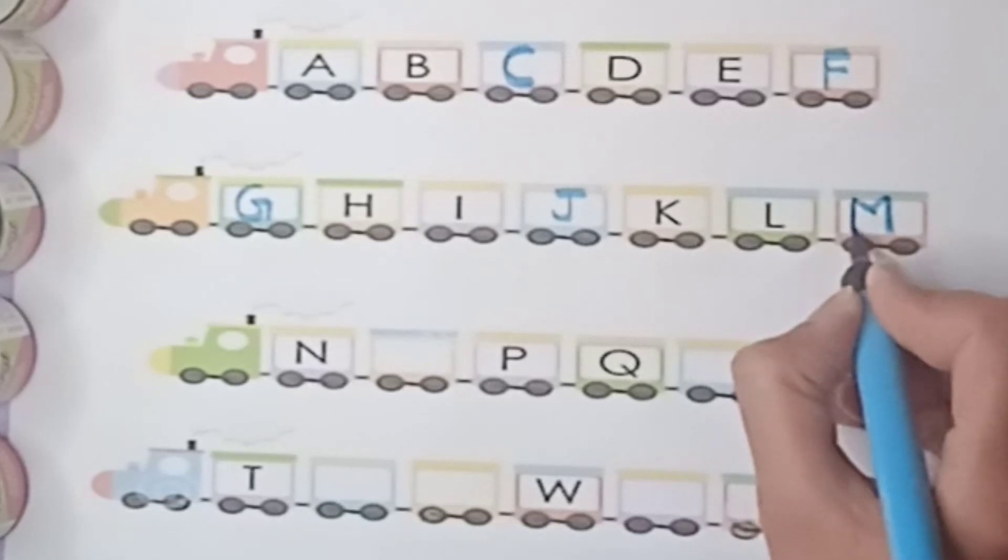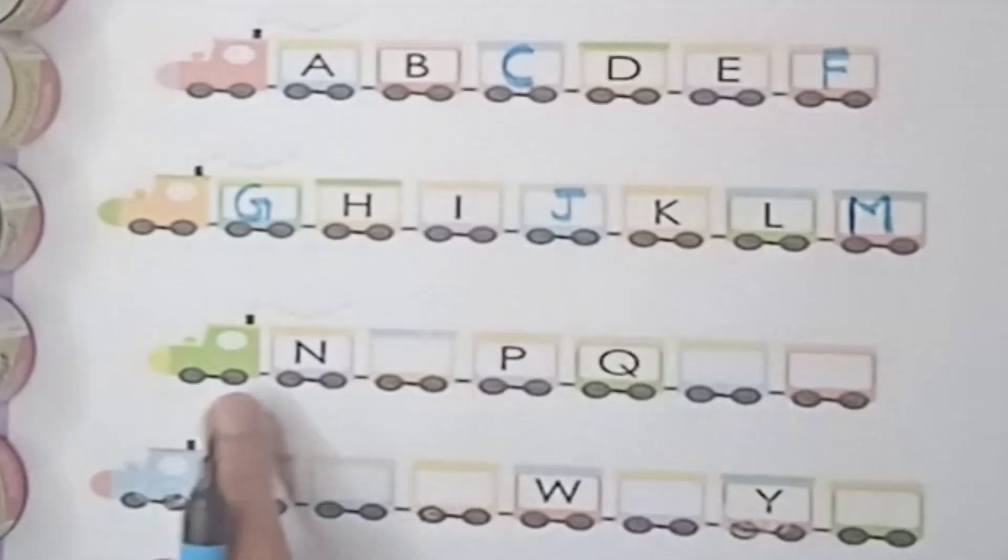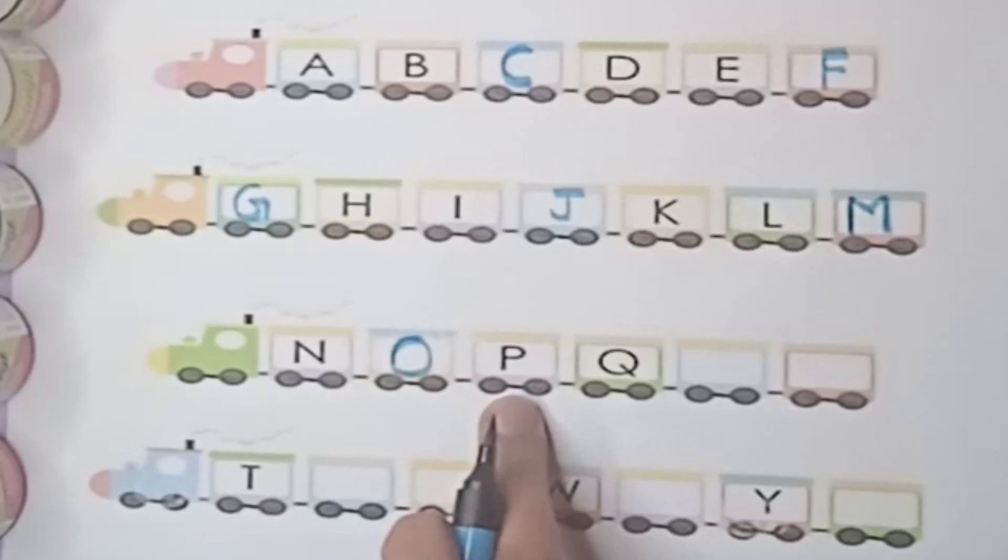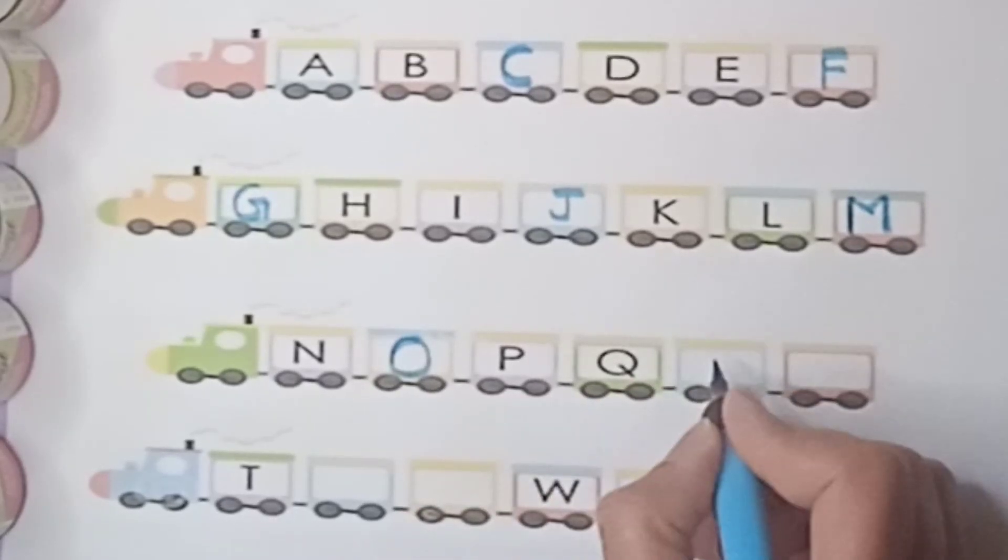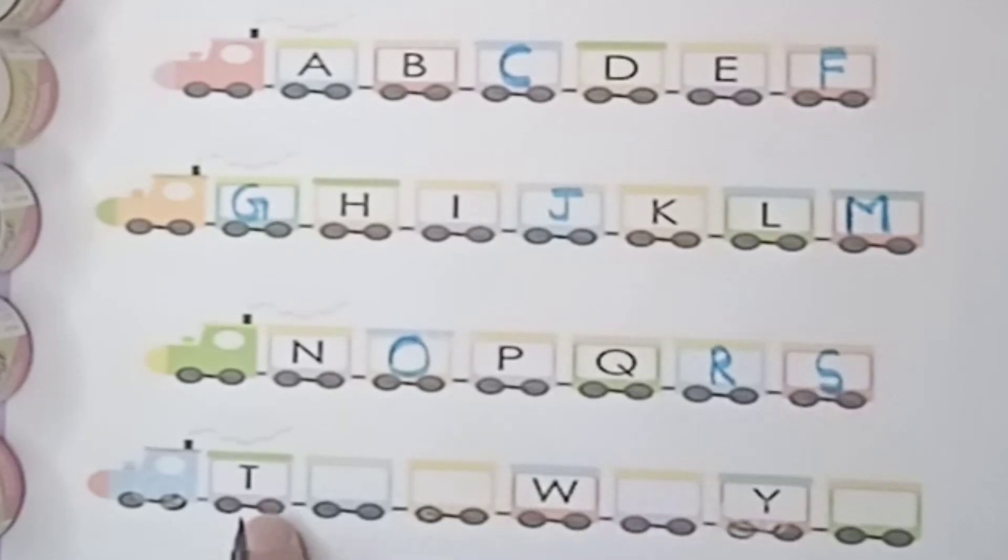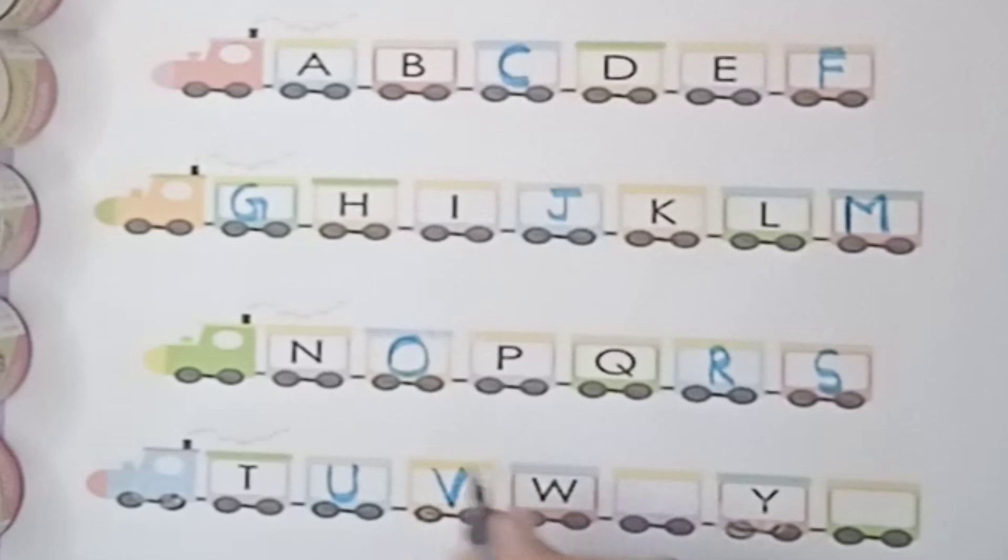Very good. What comes after L? M, well done. N, O. What comes after N? O, good. P, Q, R. What comes after Q? R, S, T, U. Very good. U for umbrella, V.